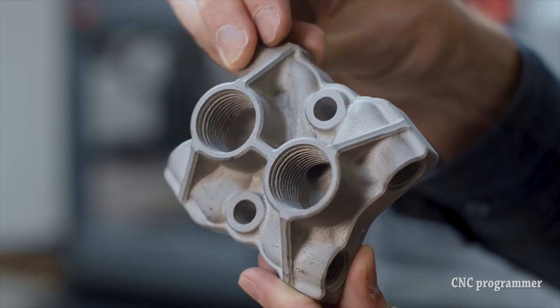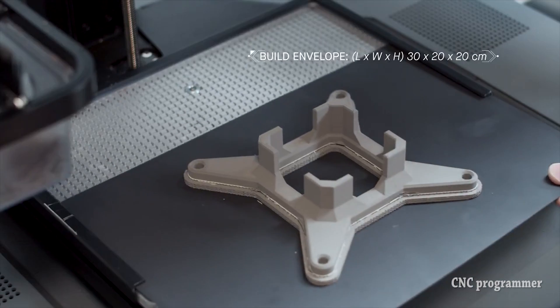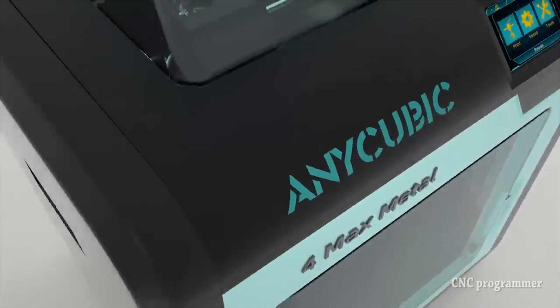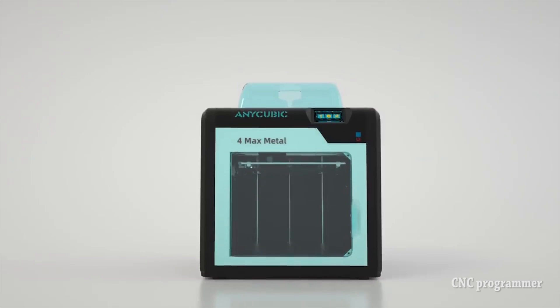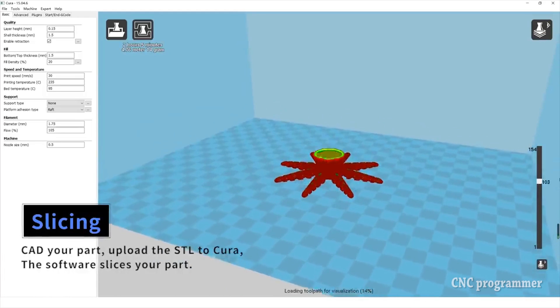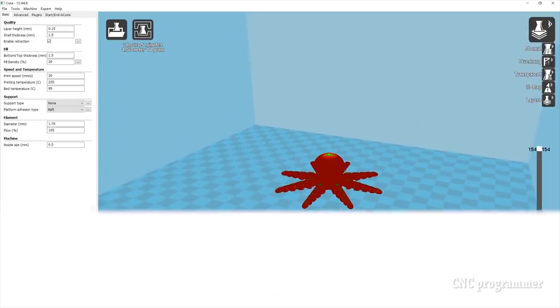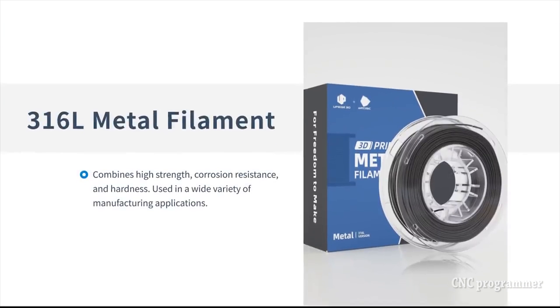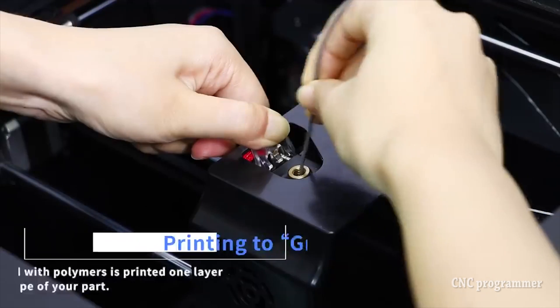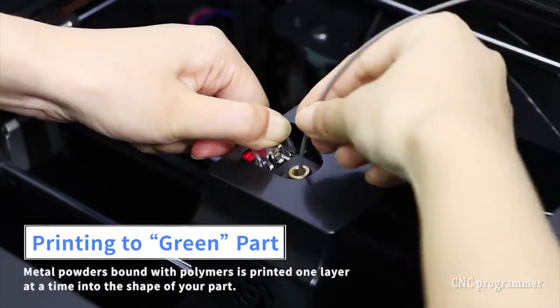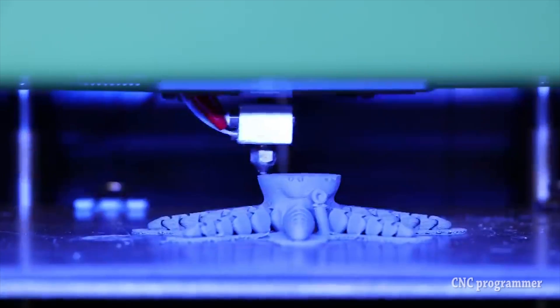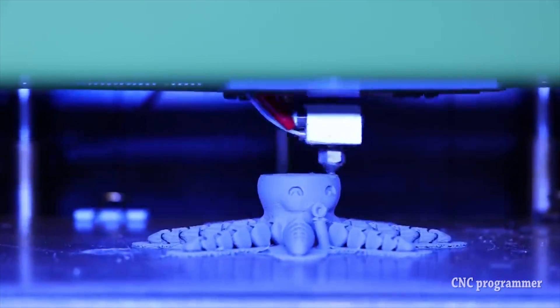How it works: At the heart of FDM Metal Printing lies a process known as Metal Fused Filament Fabrication (MFFF). In MFFF, metal powders are mixed with a polymer binder to create a filament suitable for extrusion through the printer's nozzle. As the printer deposits layers of this composite material, a subsequent debinding and sintering process removes the binder and fuses the metal particles together, yielding a solid metal object.